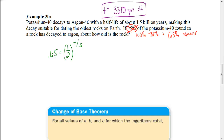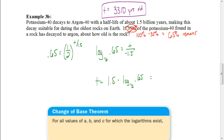You should have set it up with 0.65 as your total. Putting it in logarithm form: the log base one-half of 0.65 equals the exponent, which is t divided by 1.5. To solve for t, multiply both sides by 1.5, which gives an answer of 0.932. Since this is in billions of years, you could express it as 0.932 billion years, or 932 million years old. Either answer would be fine.